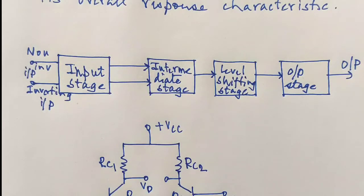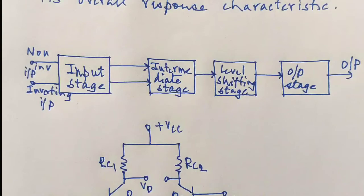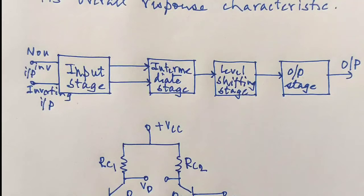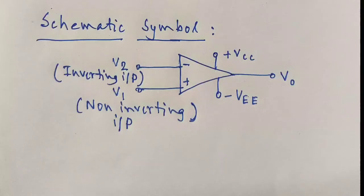The final stage is a push-pull complementary amplifier output stage. This output stage increases the output voltage swing and raises the current supplying capability of the op-amp. A well-designed output stage also provides low output resistance for an op-amp. This concludes the block diagram of an op-amp.